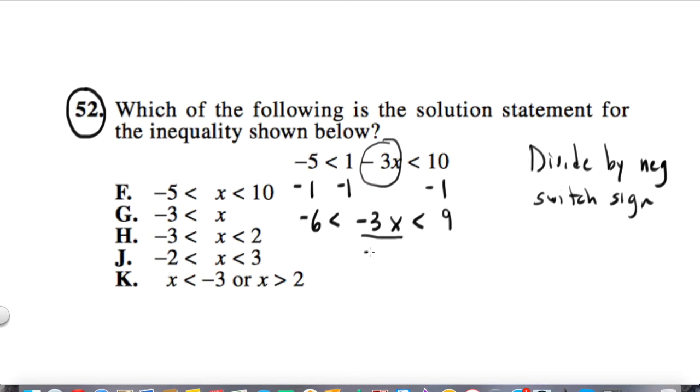Now we divide by negative 3, and this is where the signs switch. So you might just switch them right away. Negative 6 divided by negative 3 is going to be 2.